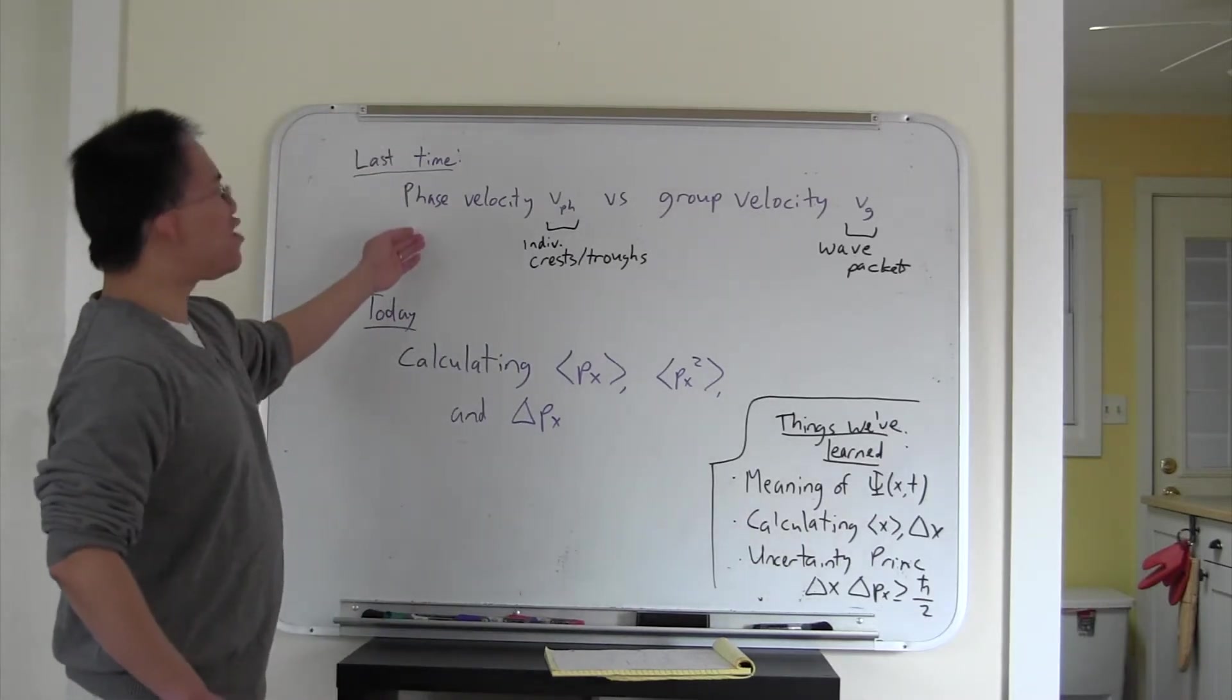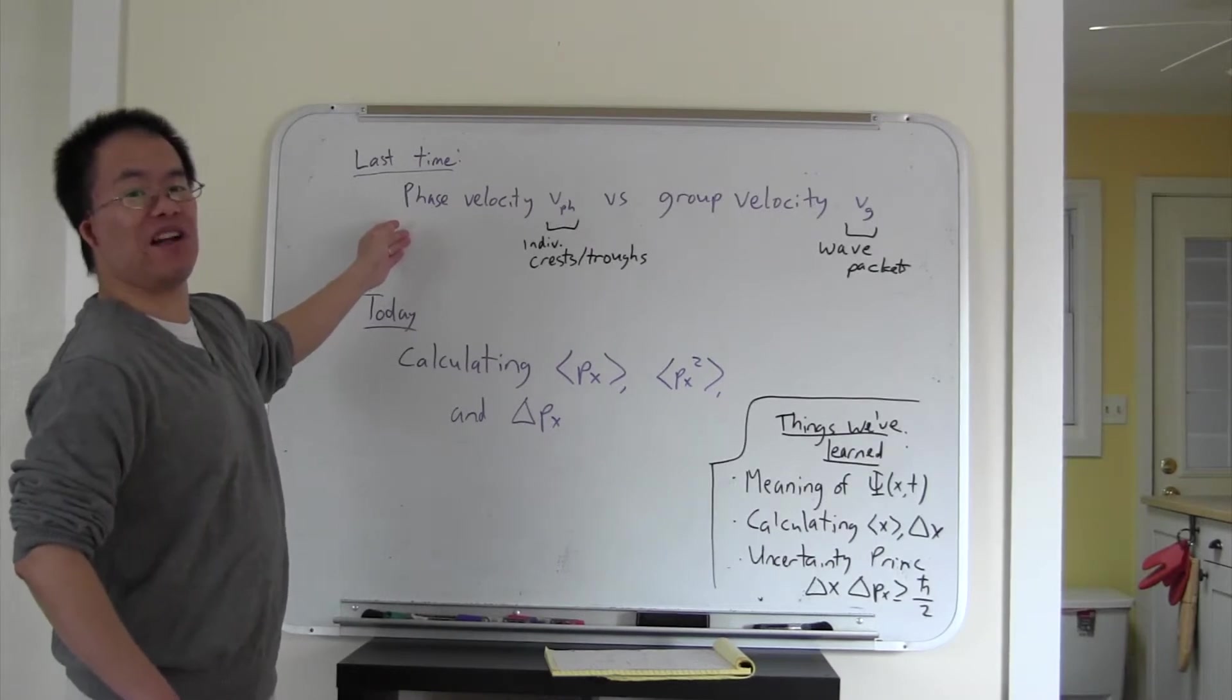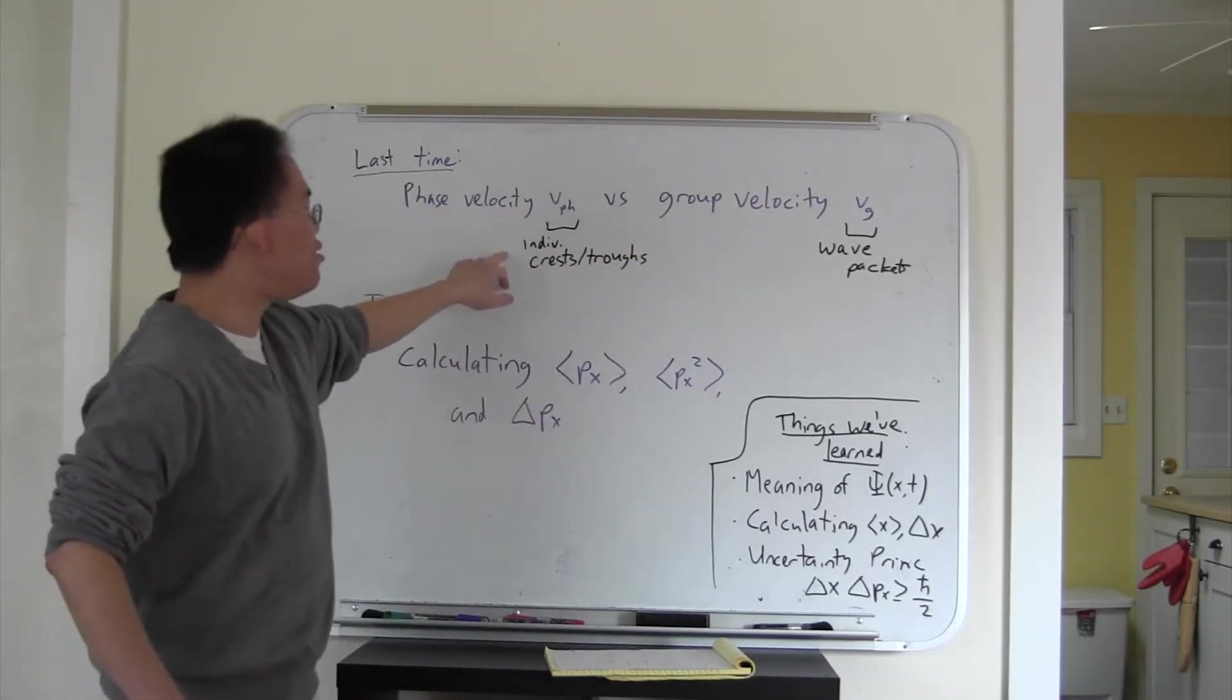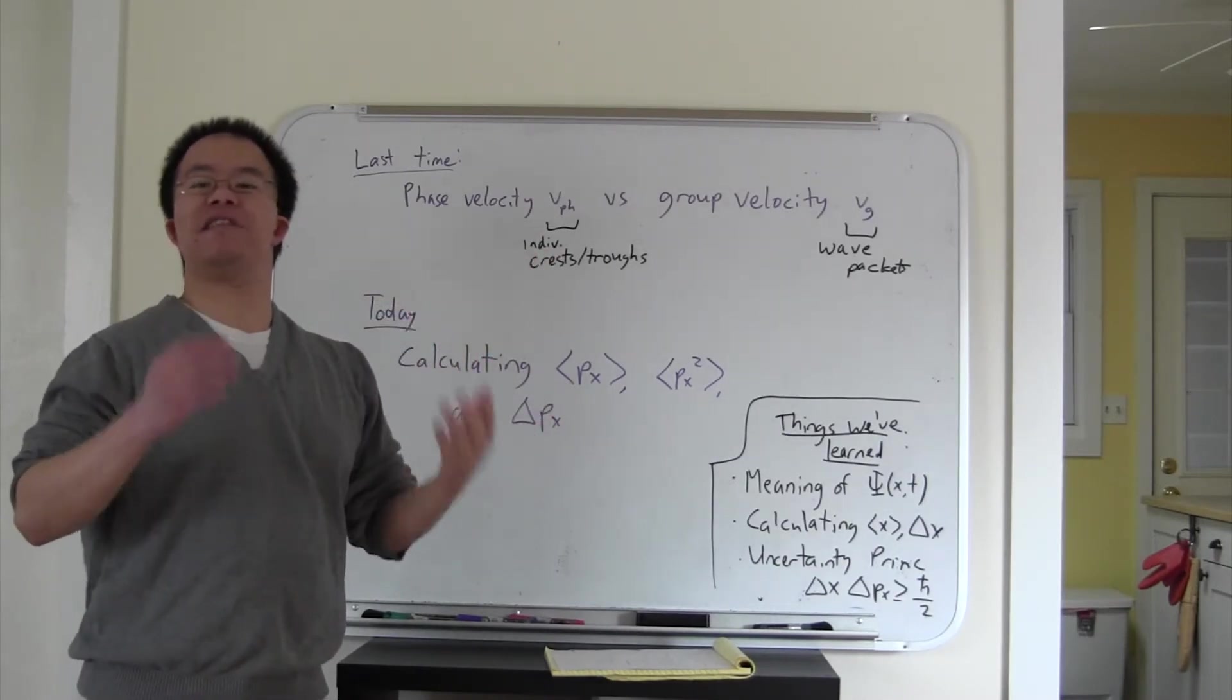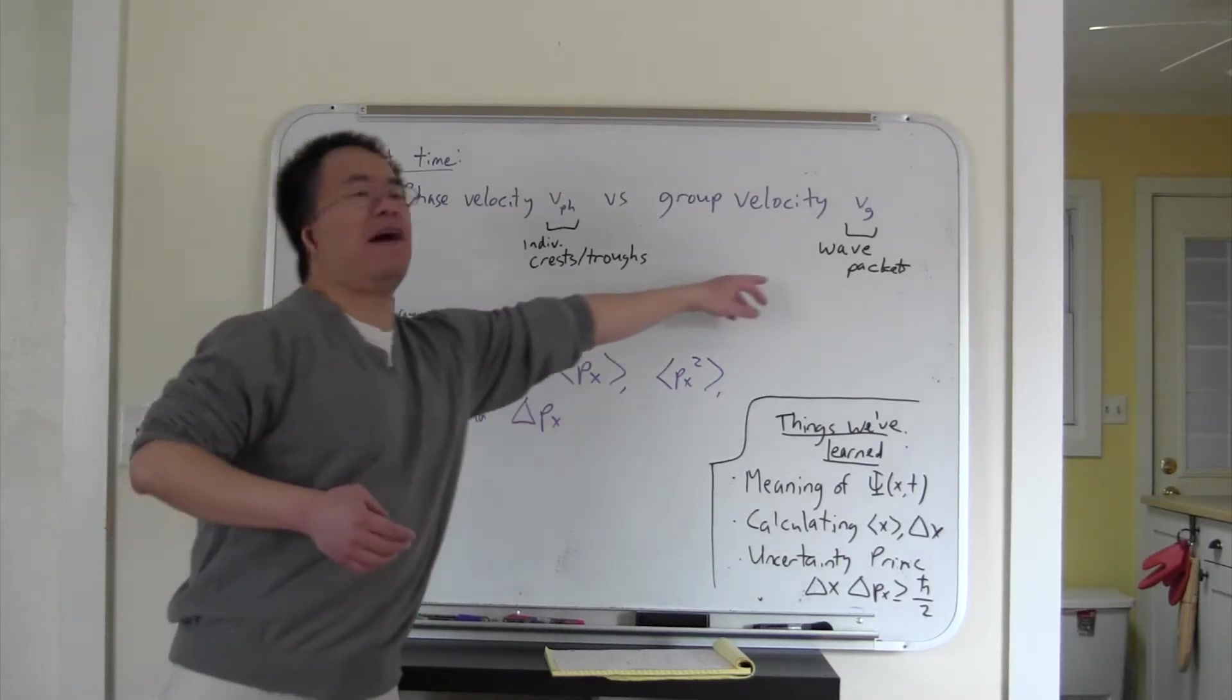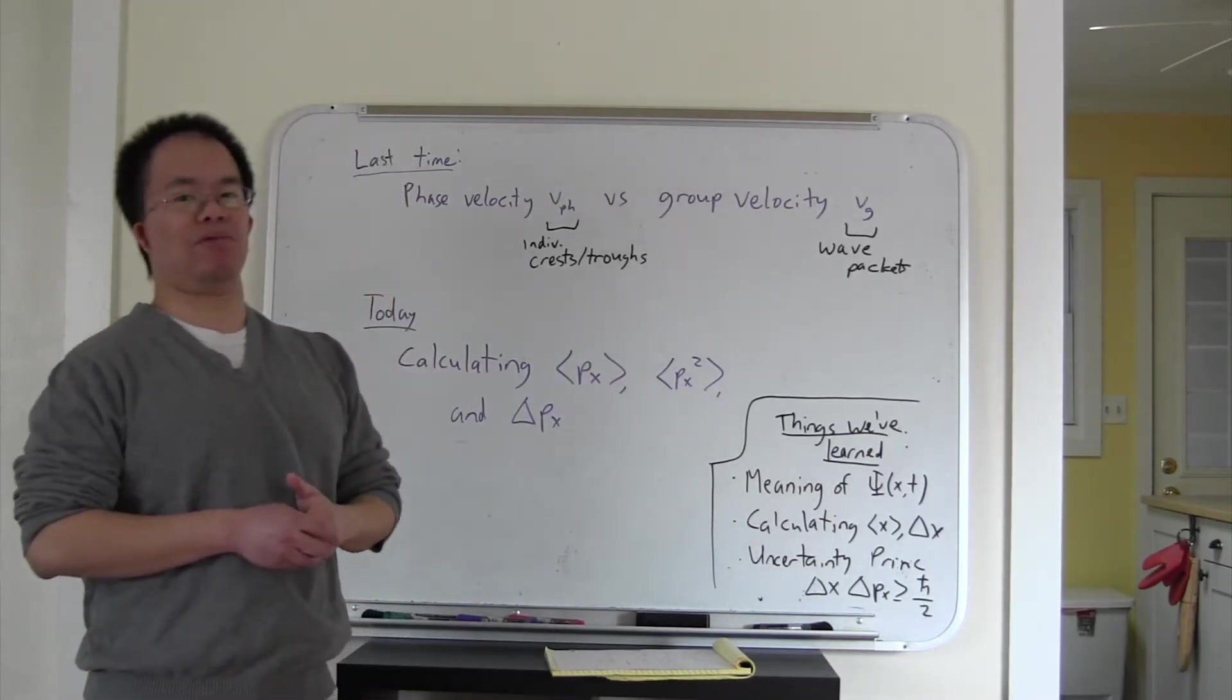Last time we talked about the difference between phase velocity and group velocity. The thing you should remember is that the phase velocity is how fast individual sinusoidal crests and troughs move in a wave, whereas the group velocity is how fast a wave packet moves.